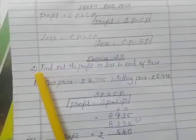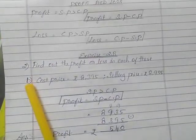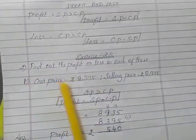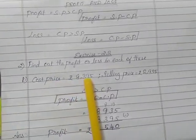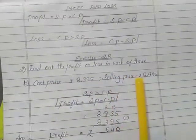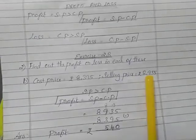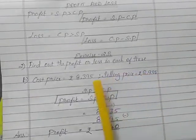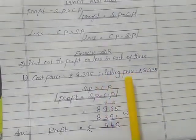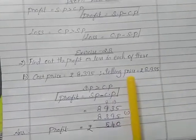Exercise 2B, second sum. Look at the B sum. Cost price they given, 8,395. Selling price, 8,935. In this sum, we are going to find if this is profit or loss.